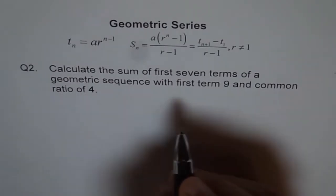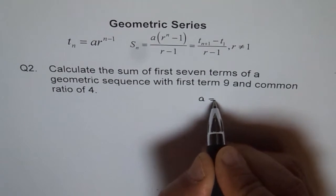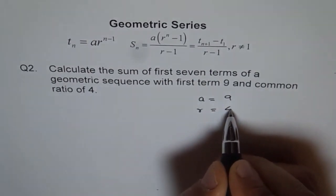So here we are given A, which is the first term, is 9, so A equals 9, and the common ratio R equals 4.